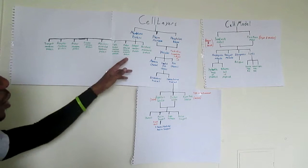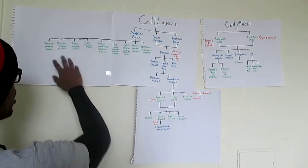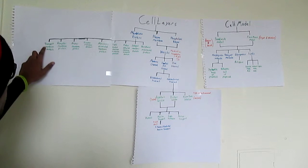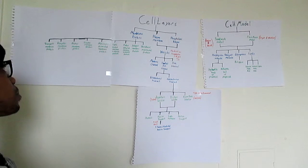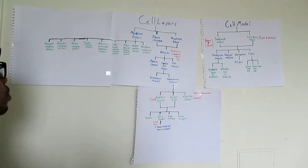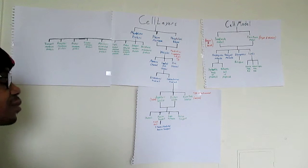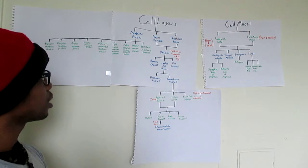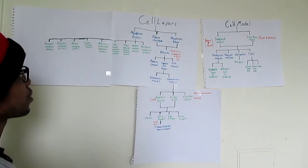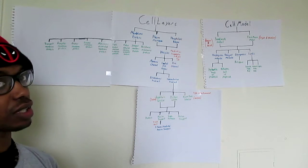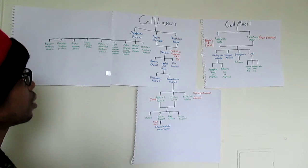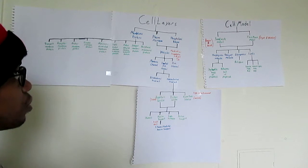The membrane protein breaks down into eight proteins: the transport membrane protein, the receptor membrane protein, the anchor membrane protein, the enzyme membrane protein, the monolayer associated membrane protein, the lipid linked membrane associated protein, the protein attached membrane associated protein, the integral membrane protein, and the peripheral membrane protein.